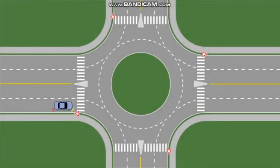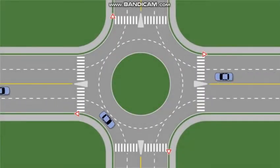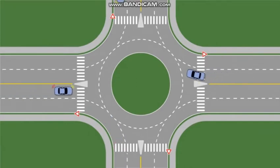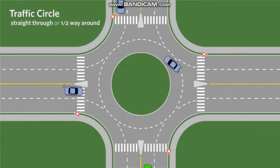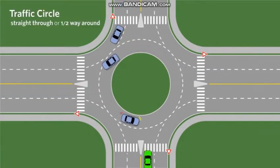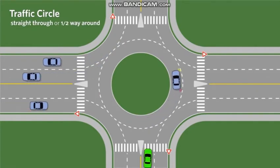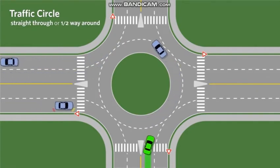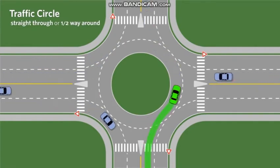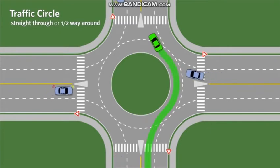To drive halfway around a traffic circle, the correct approach is to enter from the left or inside lane. Signal left, yield to pedestrians and traffic in the circle, and proceed when safe. Exit by signalling right and staying in the left or inside lane.